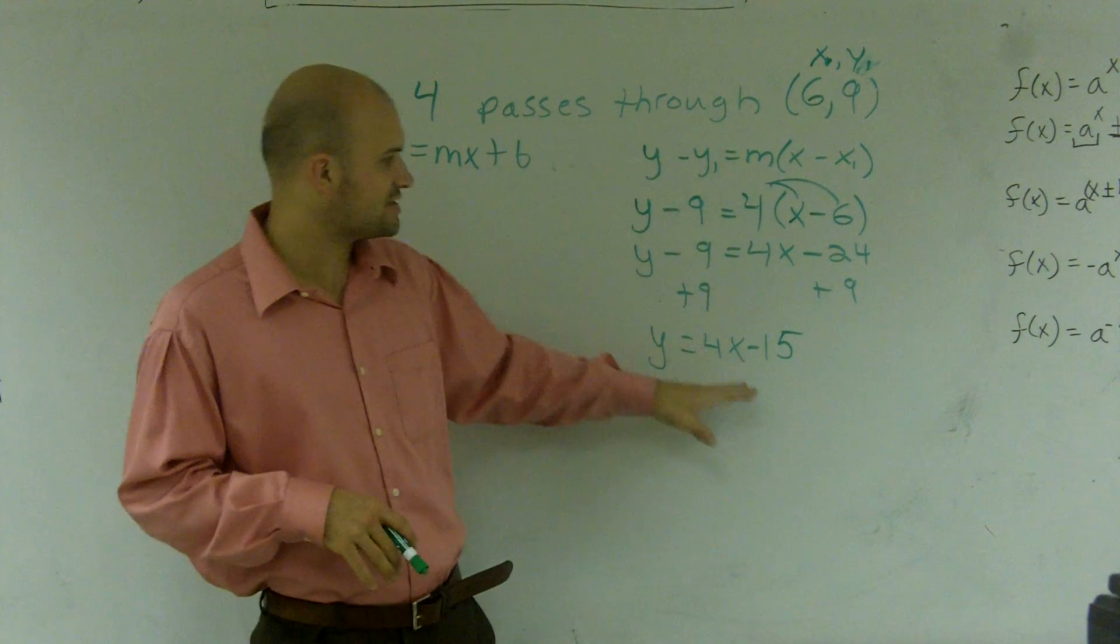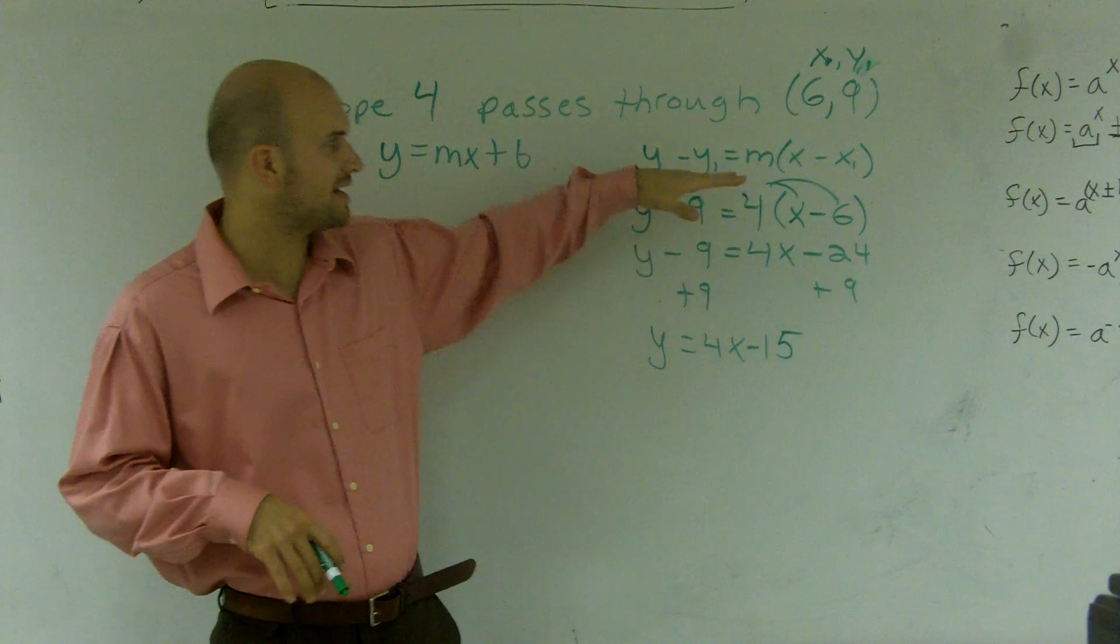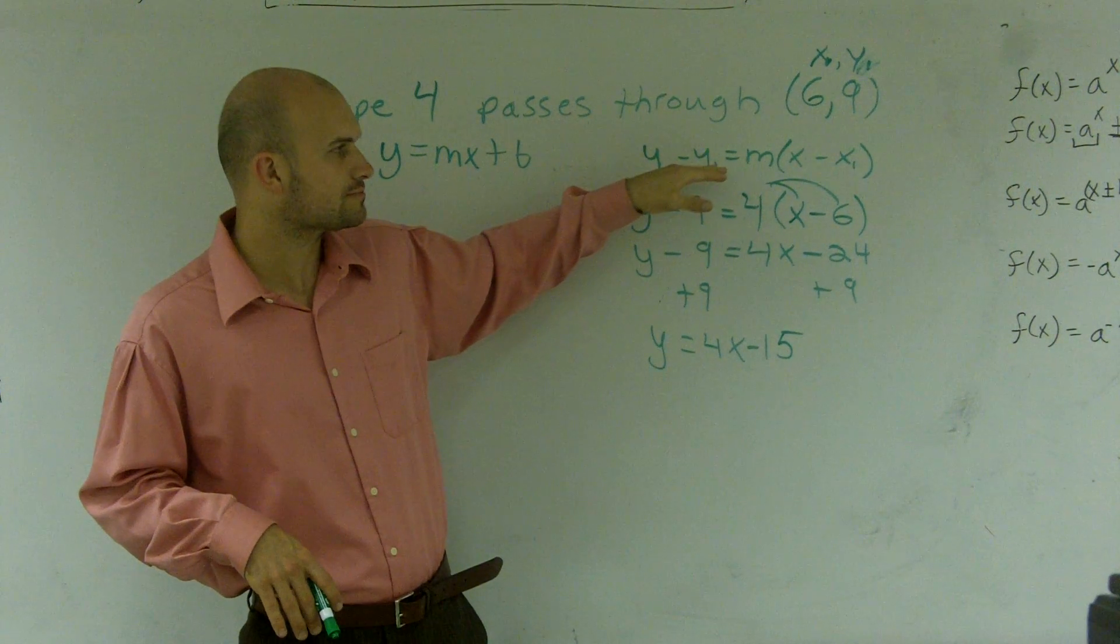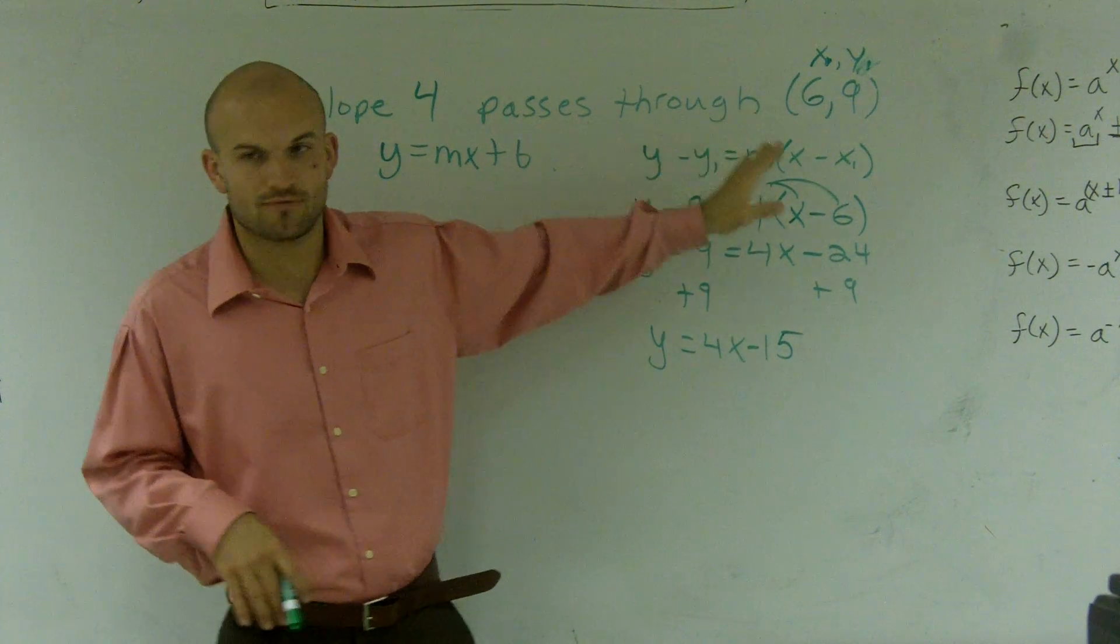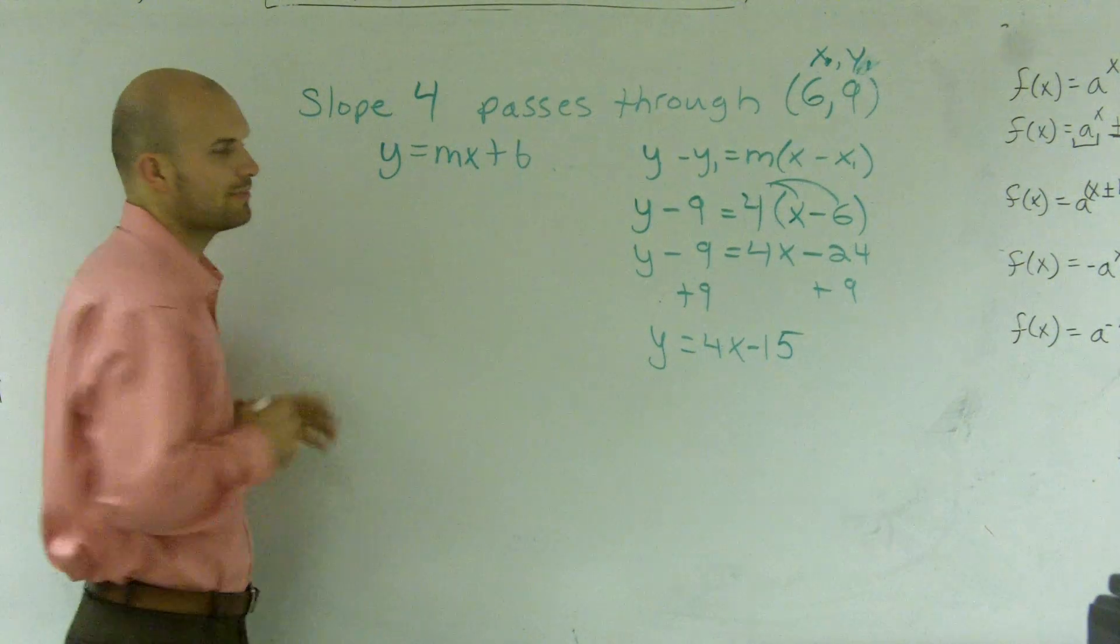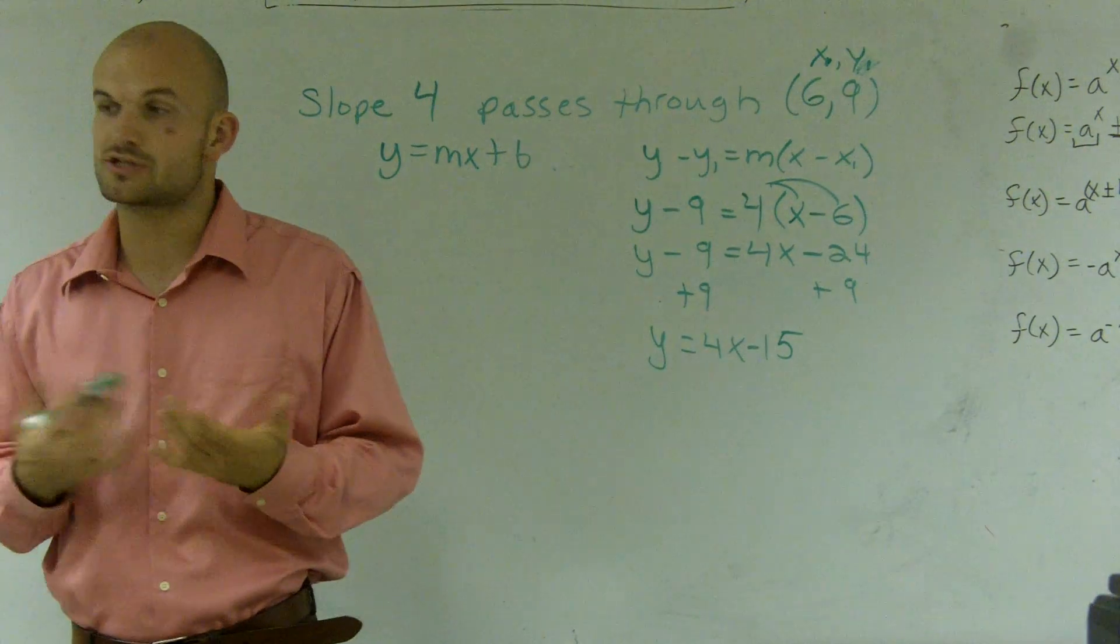So I previously showed you guys this example by plugging the equation into my point-slope form equation. What I want to do now is show you how to do it when you plug it into y equals mx plus b, or the slope-intercept form.